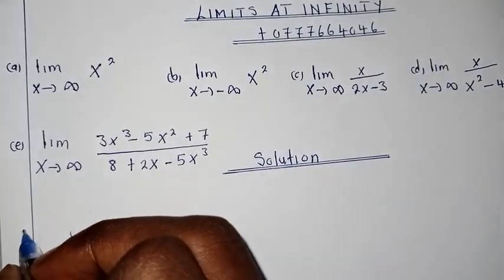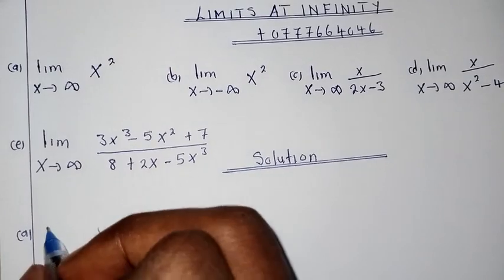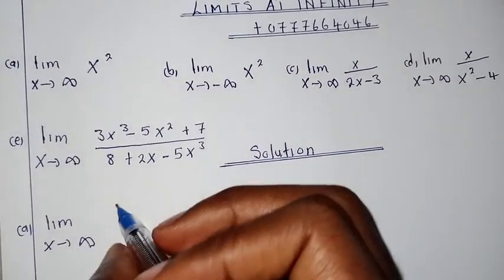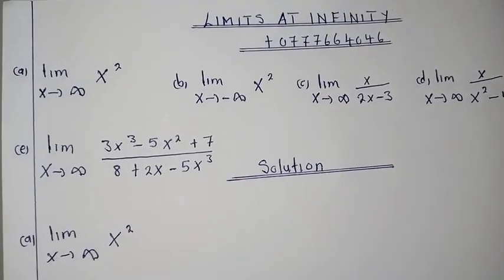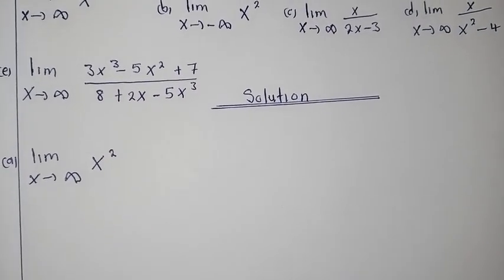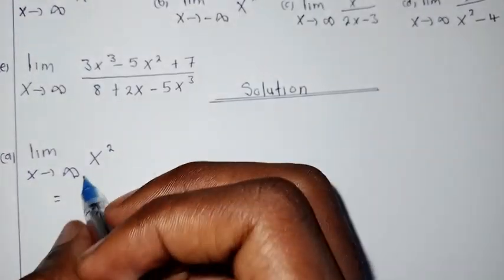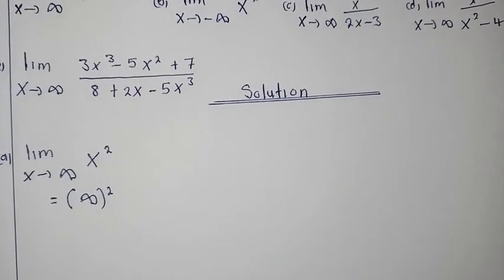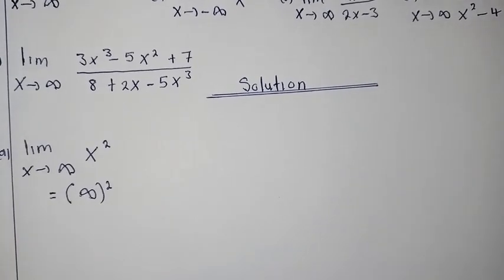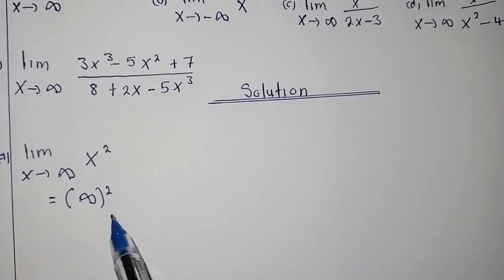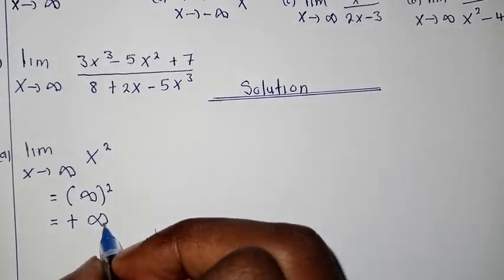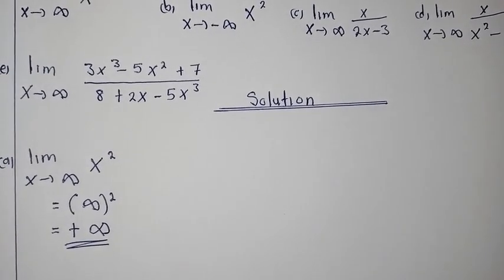For the first one, we have the limit as X is approaching infinity of X to the power 2. The only thing you are supposed to do is replace infinity where there is X. Infinity to the power 2 is simply infinity, so the answer will be positive infinity, because that is what the numbers are going to be running to.